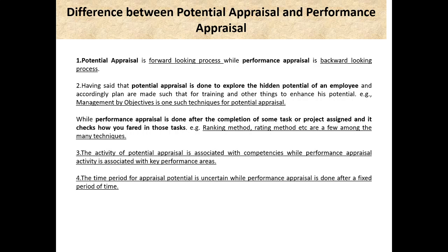There are a lot of differences between potential appraisal and performance appraisal. Potential appraisal is for the future — it is a forward-looking process — while performance appraisal is a backward-looking process. Potential appraisal is done to explore the hidden potential of an employee, and management by objective is one technique used for it, while performance appraisal is done after the completion of a task or project and checks how you fared in those tasks.